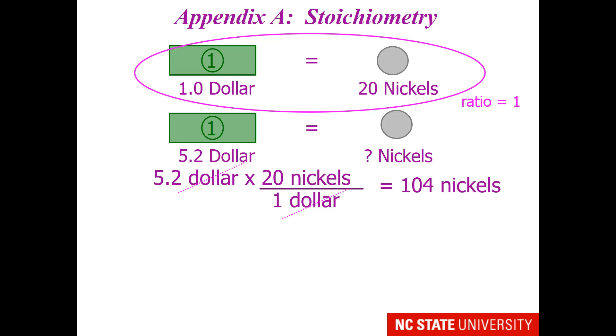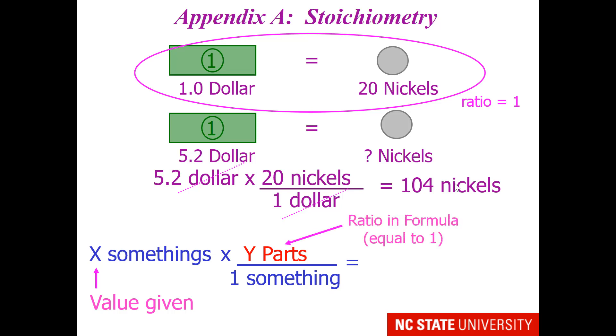This would be very fast to type out on your calculator, and it'd be very doable, especially if the ratio weren't so neat. What if there were 27 nickels to a dollar? Well, then it would be much easier to do this particular math operation. So, this type of math operation is known as units conversion. You take what you're given, your x somethings, and then you multiply it by a ratio of 1 divided by 1, Y parts per 1 something. This ratio has to be equal to 1 divided by 1, and you need to make sure that your units cancel out. So, the somethings cancel out, and you're left with the correct number of parts.